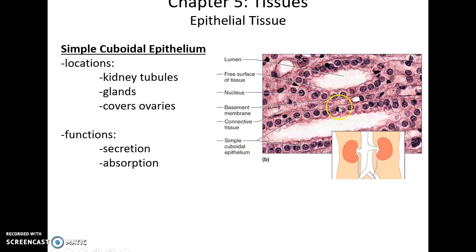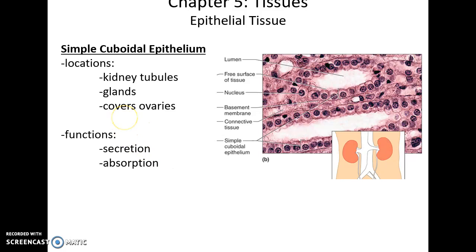Simple cuboidal epithelium is a single row of cube-shaped cells with an open space. They can form kidney tubules, glands, and the covering of the ovaries. In the kidneys, they can be involved in secretion and absorption.